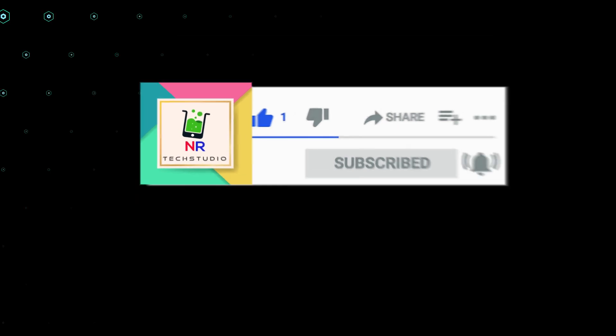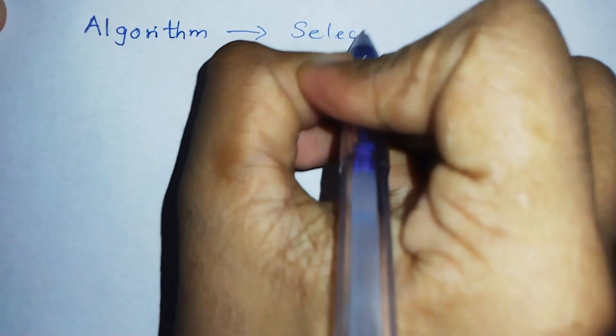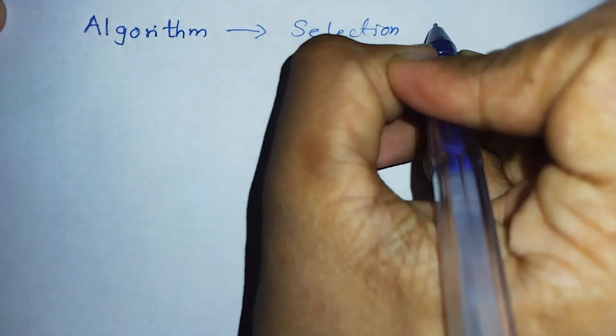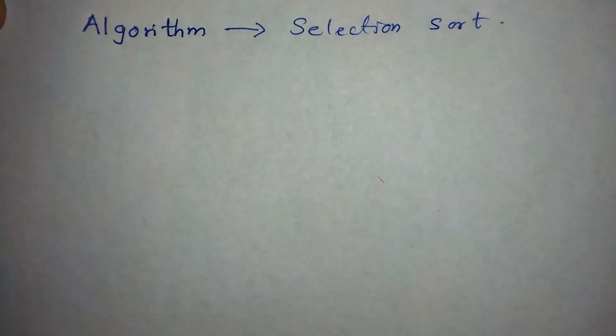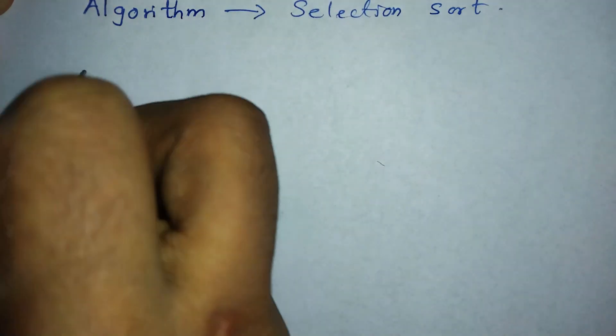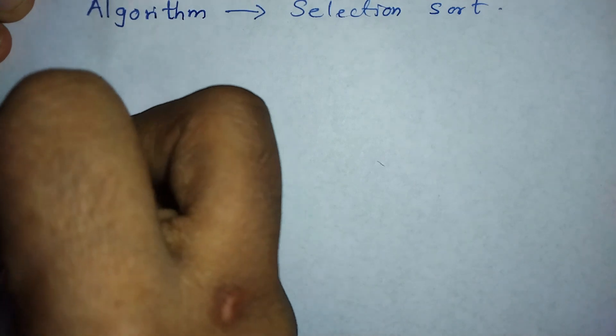Welcome back. Today I'll explain the simple mechanism behind the selection sort algorithm. The selection sort algorithm sorts an array by repeatedly finding the smallest element from the unsorted part of the array and inserting it at the beginning of the array.